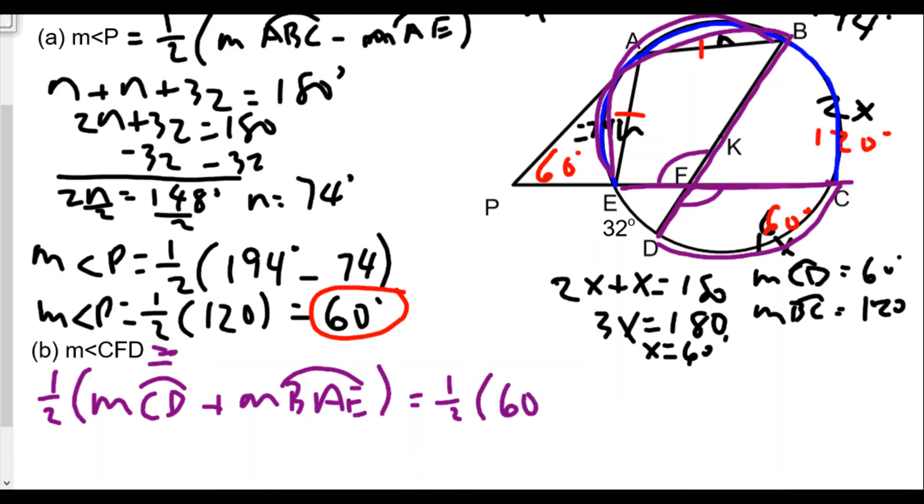The nice thing is that the measure of CD we found earlier, so that's one half of 60 degrees. And then measure of arc BAE is just going to be the sum of the two arcs AB and AE, so that's going to be 148 degrees. 74 plus 74 equals 148. So now we take one half the sum, which is 208, so the measure of angle CFD is equal to 104 degrees.